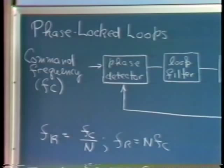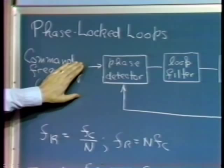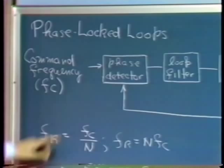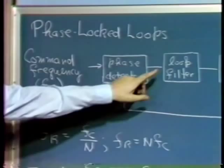In certain kinds of phase-locked loops, we have a sinusoidal input; in others we may have a digital logic kind of signal. But in any of these, the common feature is that the information of interest is the frequency of the signal. That input or command signal is applied to a phase detector, and the output of the phase detector goes to an element called a loop filter.